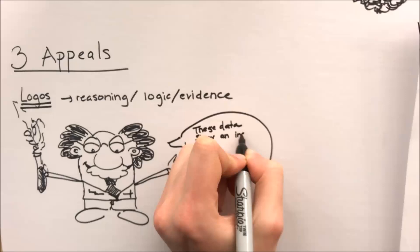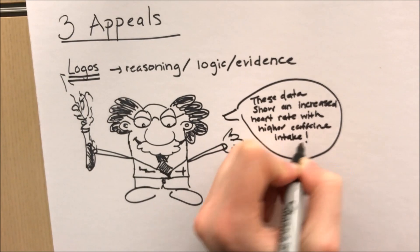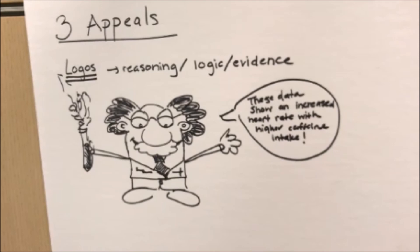It's important to note that you won't be using all of the appeals in every argument. For example, in the sciences, pathos is not valid. However, the rhetorical triangle should always be considered in every argument.